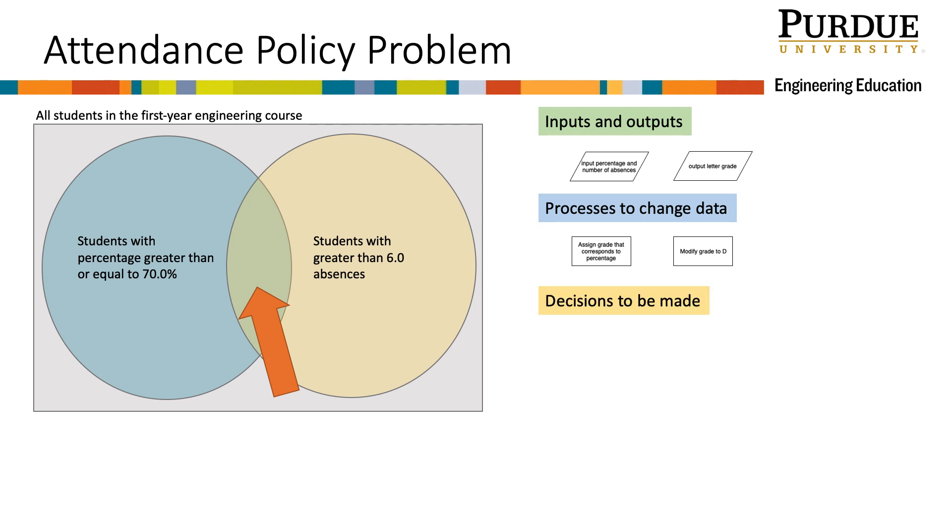There are two times decisions need to be made. One decision is, do students have a percentage greater than or equal to 70%? And the other is, do students have greater than 6.0 absences? Decisions are marked with a diamond and answer yes, no, or true, false questions.